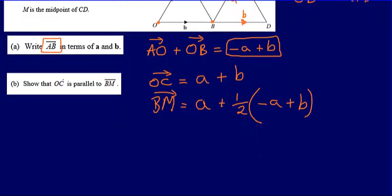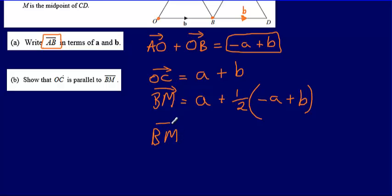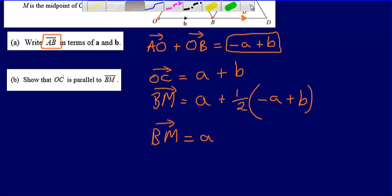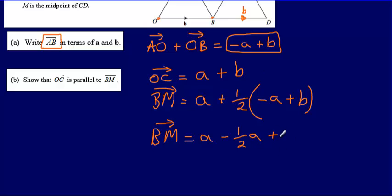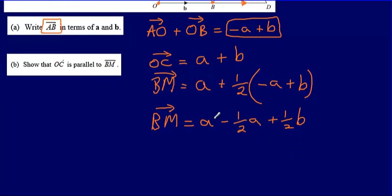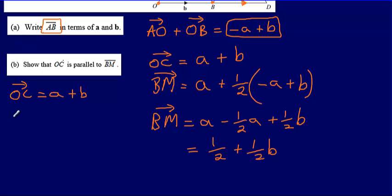So tidying up the vector BM: a plus half of (minus a plus b) gives a minus half a plus half b, which simplifies to half a plus half b. So to summarise: vector OC equals a plus b, and vector BM equals half a plus half b.